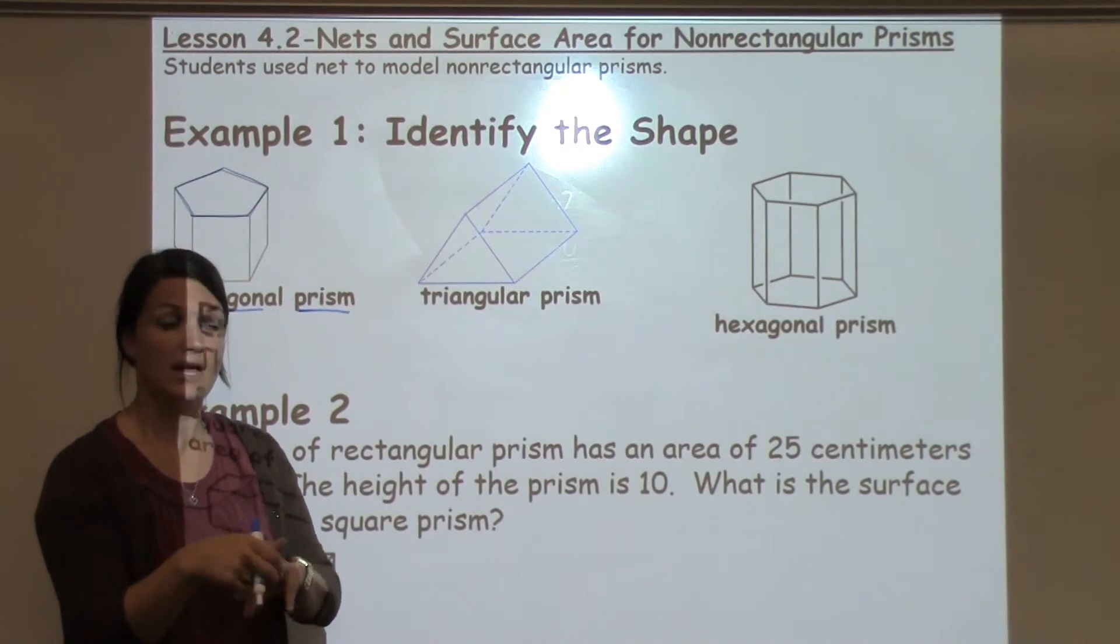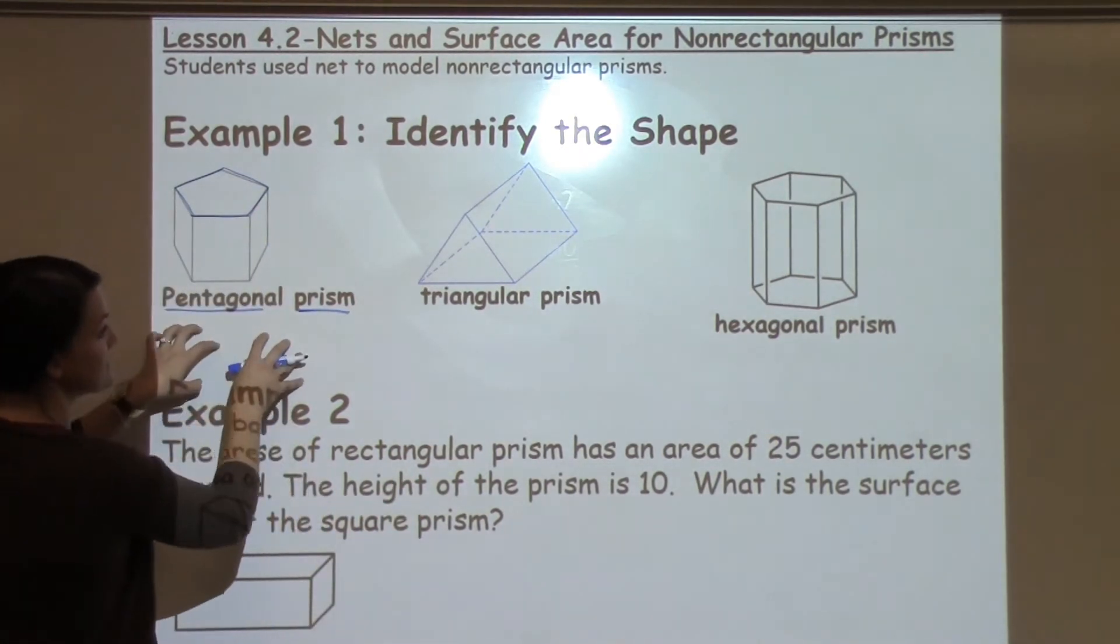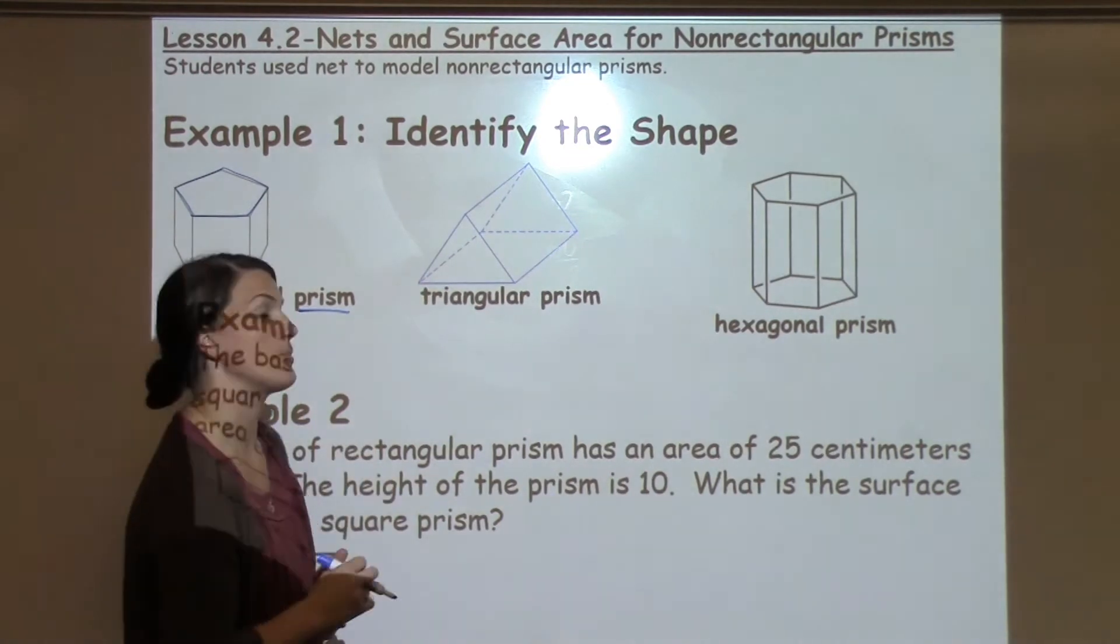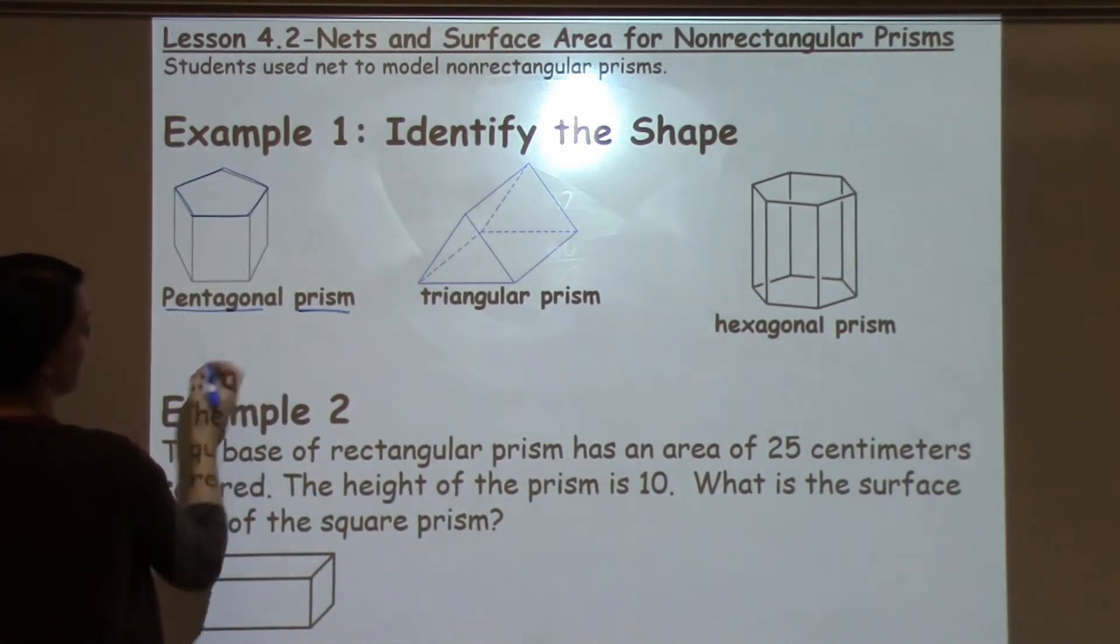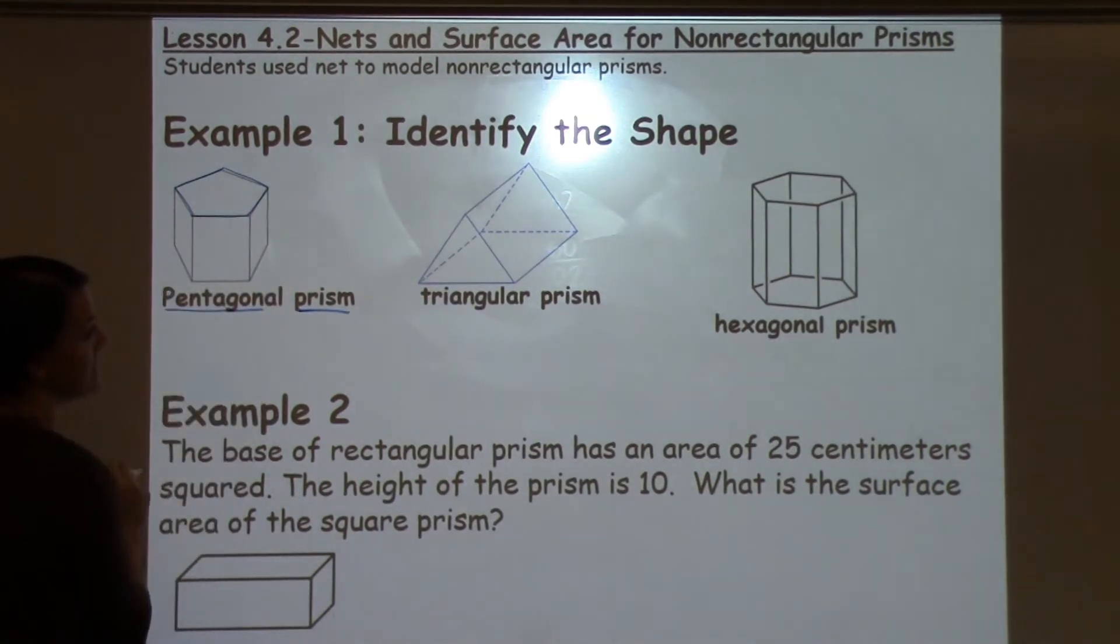There's only two types of shapes there could be when you're working with 3D shapes, prism or pyramid. And then you, of course, have a cube and a sphere and all those others. But when you're working with these kinds of shapes, it can either be a pyramid or a prism. So this would be called a pentagonal prism because of the pentagon here and it has the long rectangular sides.